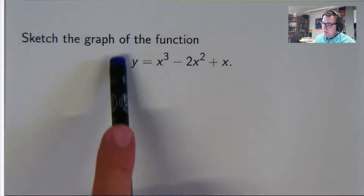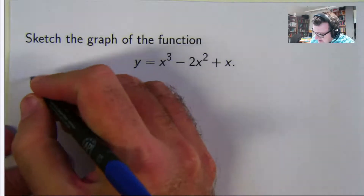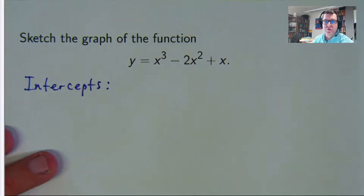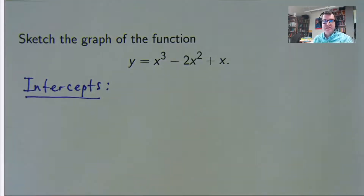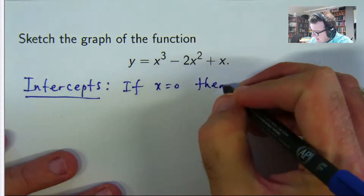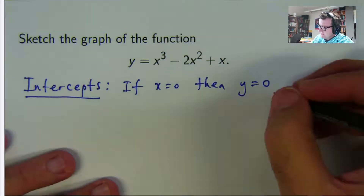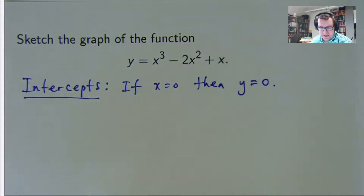The first thing we're going to look at for this function is where does it cut the x-axis and the y-axis? So we call these the intercepts. When x equals 0, that's where the graph cuts the y-axis. So we have 0, minus 0, plus 0 — so the graph goes through the point (0,0), essentially through the origin.